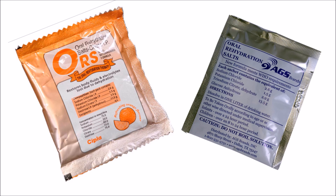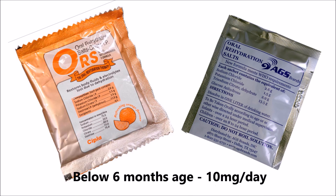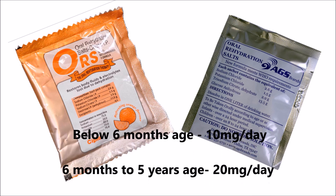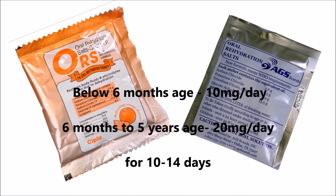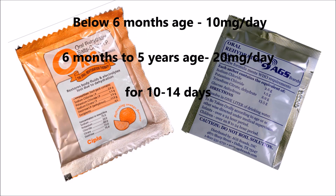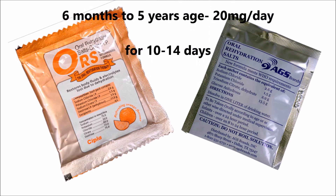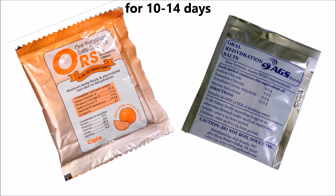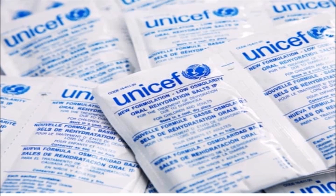The one litre preparation should be used within 24 hours after dissolving in water. Zinc is also important because it reduces the duration and severity of diarrhea in children. The dose for children less than six months is 10 mg per day. For children aged six months to five years, the dose is 20 mg per day, given for 10 to 14 days in oral suspension form. Zinc syrup is also available.